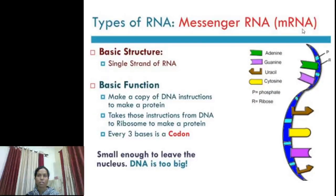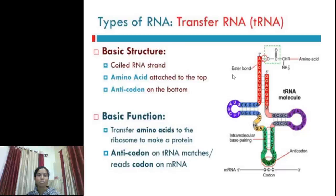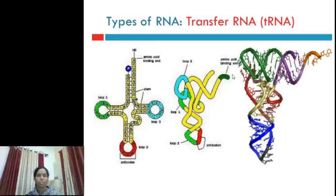The structure of mRNA: mRNA has a linear structure and nitrogen bases are present on it. Three bases form a single codon. tRNA has a cloverleaf or hairpin structure. On one site, the amino acid binds and it transfers to the site of protein synthesis on the ribosome in the process known as translation. These are the different representations of tRNA.